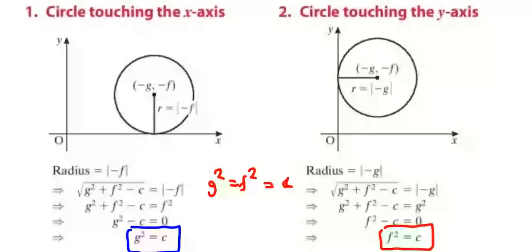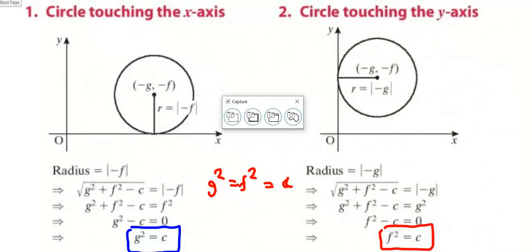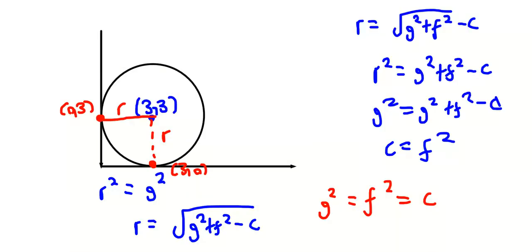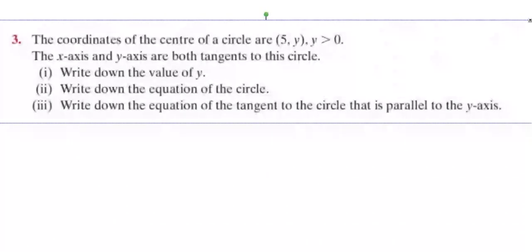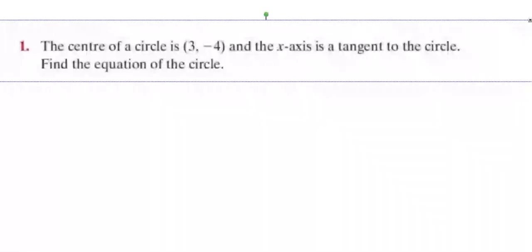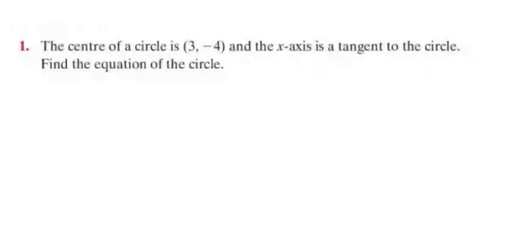Now, everybody look at the next part here. This is the question we're doing now. Question one. What type is it? It's an x-axis tangent. So what do I need to write down straight away? g squared equals c. Minus g minus f.